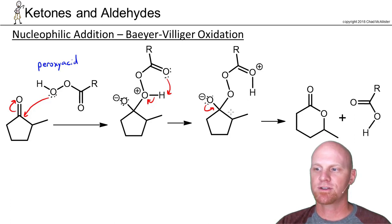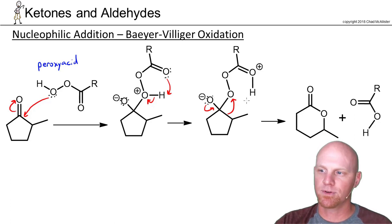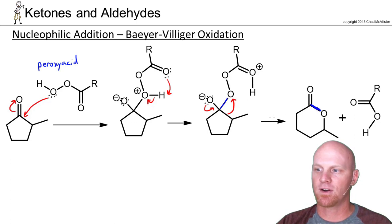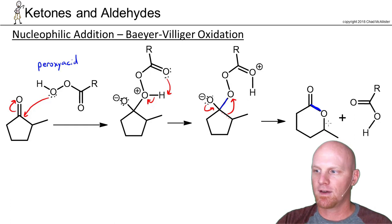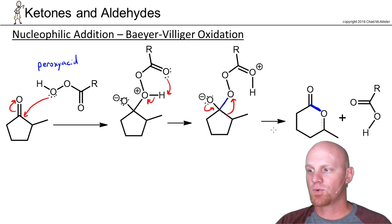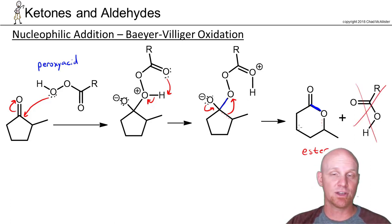Here's where the funkiness occurs. We now have this bond doing what we call a migration. This bond — highlighted in blue — migrates: we're breaking this one and making this one. We push these electrons back down and reform our double bond. And that's the whole mechanism. Now we've got our ester product, and we've also formed a carboxylic acid byproduct, which we'll purify off and can reuse.